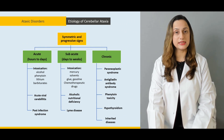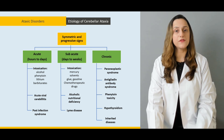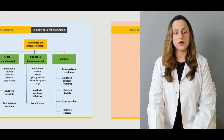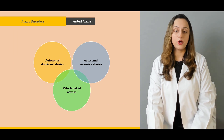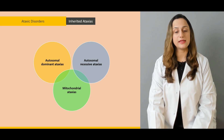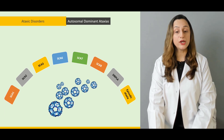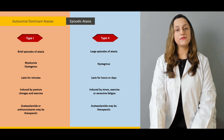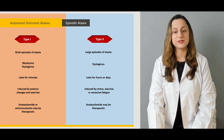The etiology of cerebellar ataxia can be subclassified according to the development of signs and symptoms into acute, subacute, and chronic variety. Then we have inherited ataxias dependent upon autosomal dominant, autosomal recessive, and mitochondrial types. The primary groups are numbered from one to eight, and we also have an episodic kind of ataxia — divided into type one and type two depending upon the duration of symptoms.